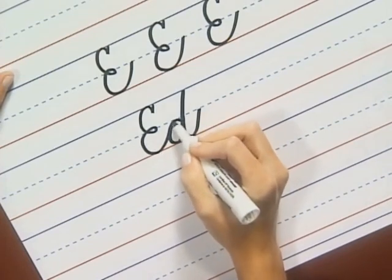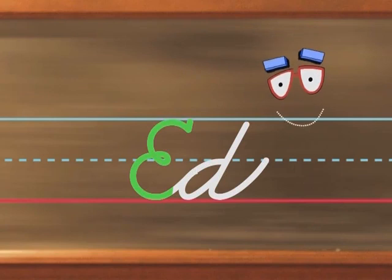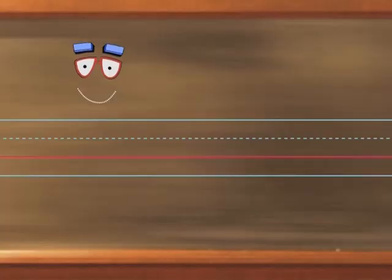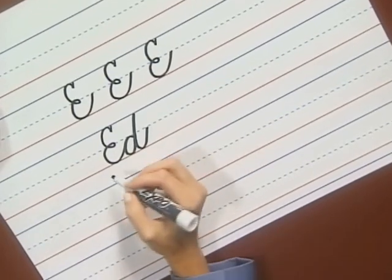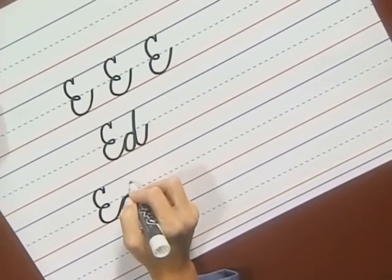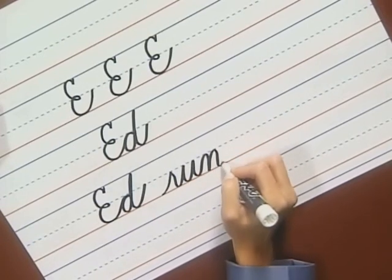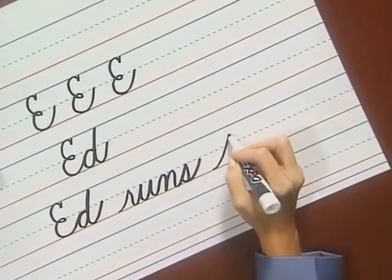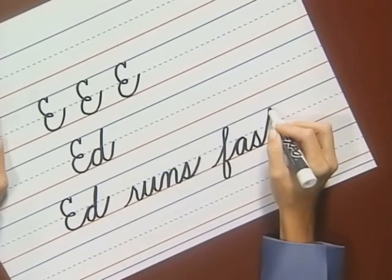The E joins the next letter because it ends with an under curve. Good old Ed. What does Ed do? Well, he wears out his shoes. Ed runs fast. So let's write that together: Ed runs fast. The E starts with a small slant, then down curve, small loop, down curve, and curve into the D. Lift and leave a space. Runs is R, U, N, and S. Lift and leave another space, then comes fast. The F has a loop back and a loop forward, then A, S, and finish with the T. Cross the T, and period.